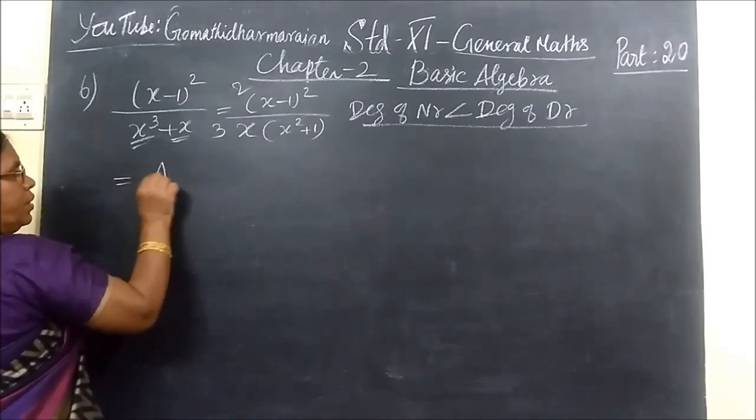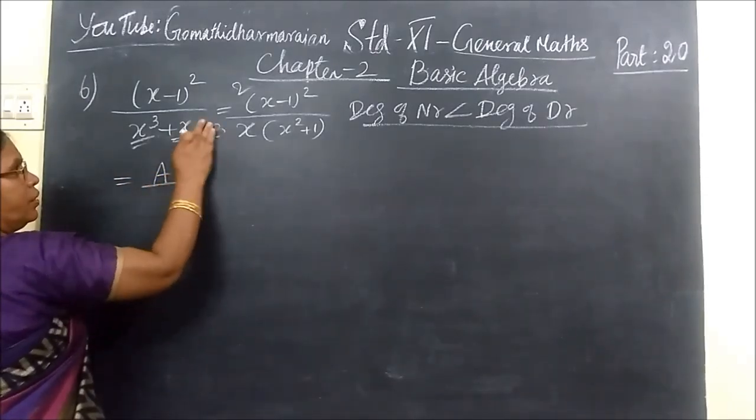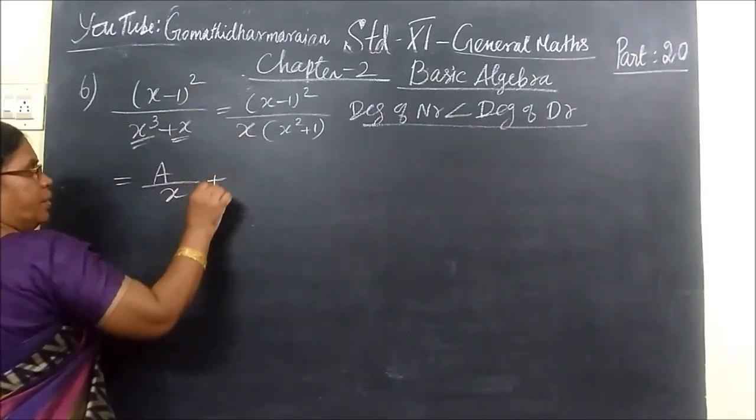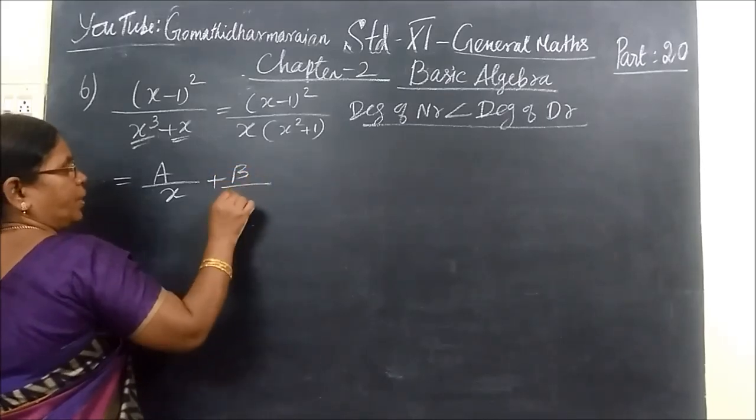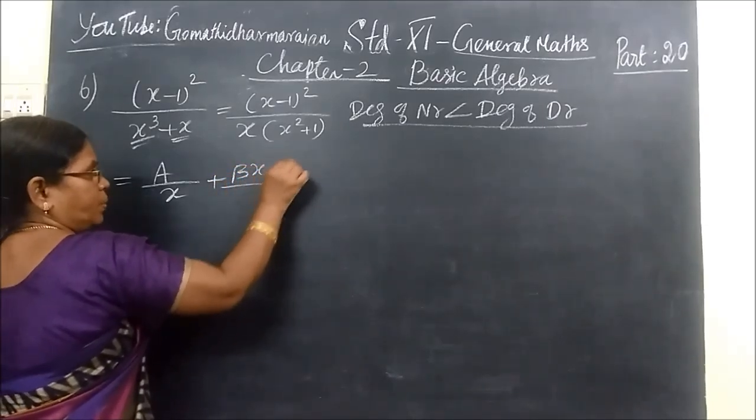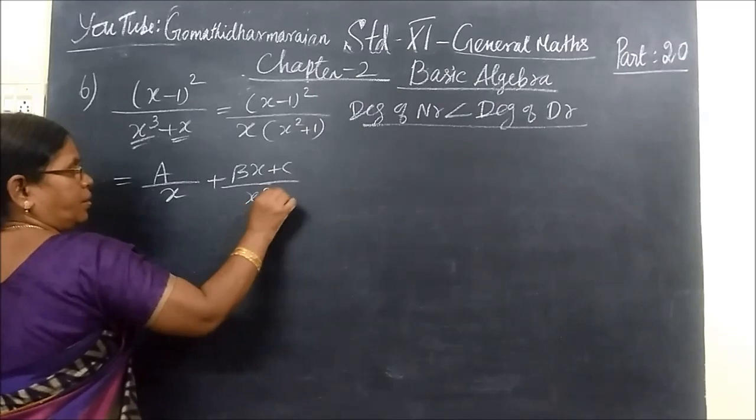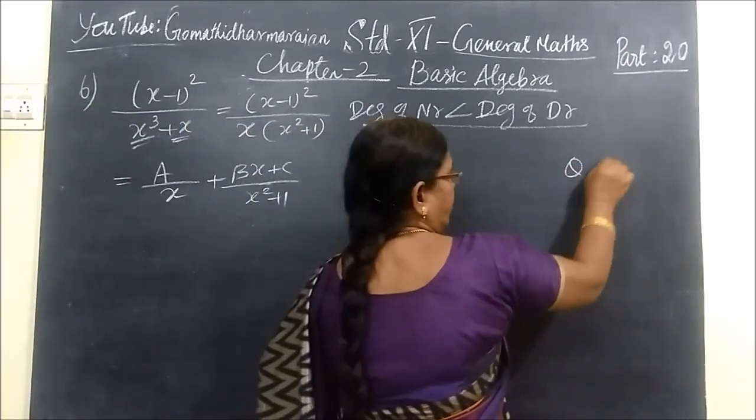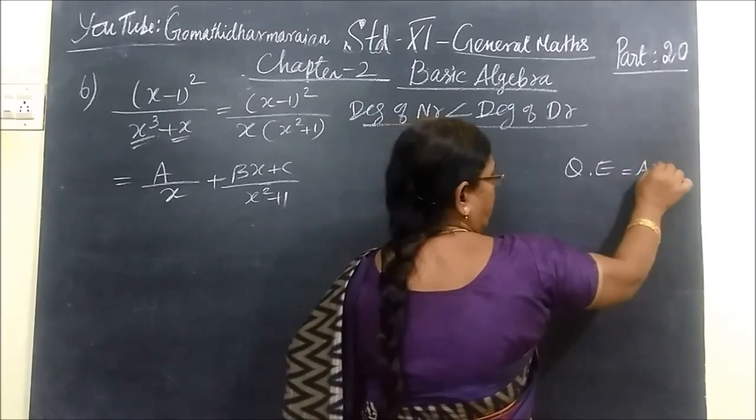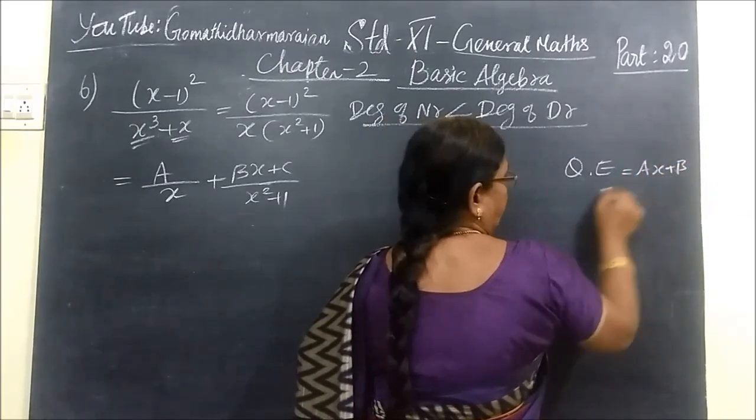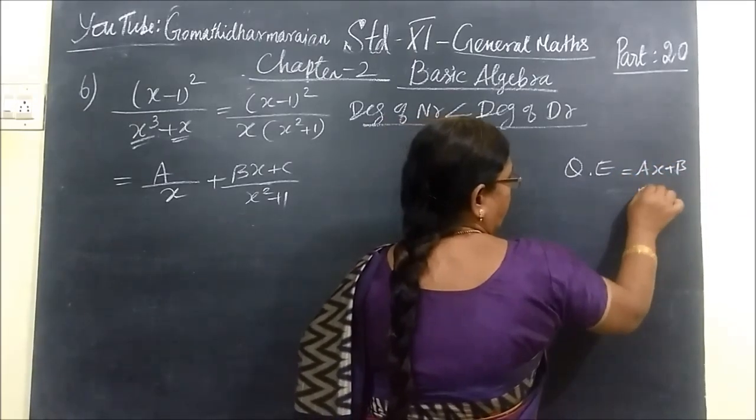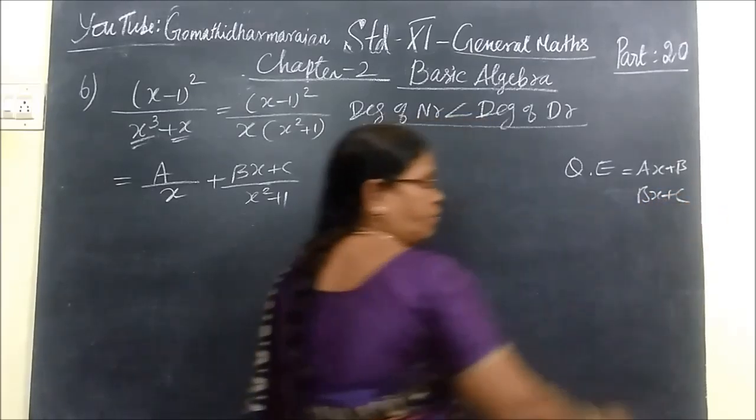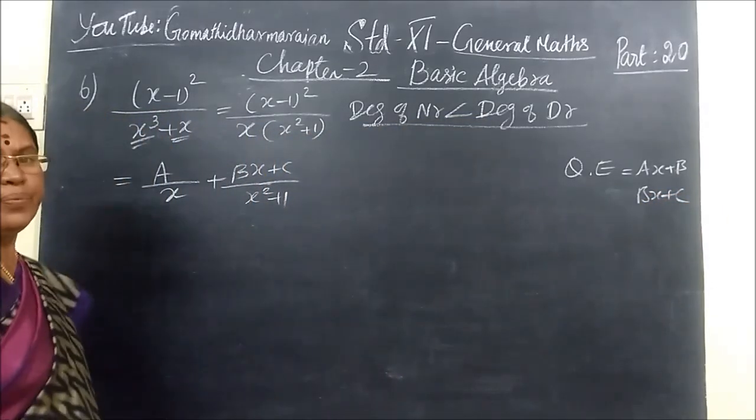Now this can be written as A/x plus (Bx+C)/(x²+1). Because already we told, quadratic equation. Here on the quadratic equation under, you are writing Ax+B or Bx+C. So in this way you are writing. This is type 3. Here will be part 6.